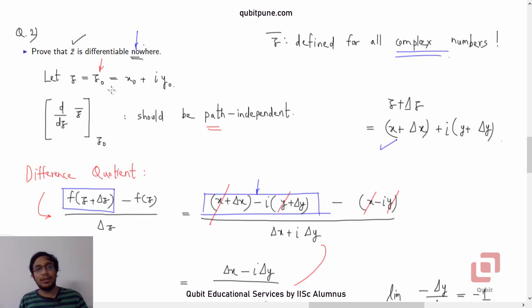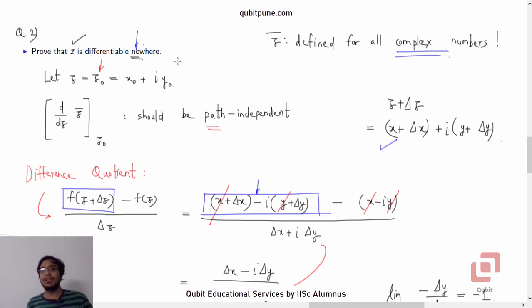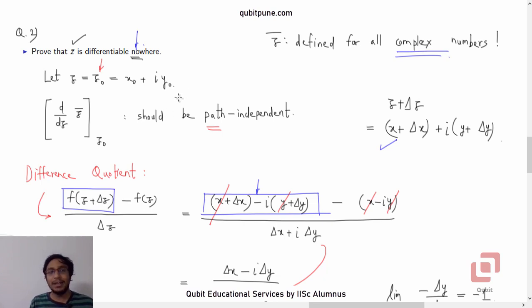As mentioned in the introduction, in the complex domain we can find many very simple-looking functions which are not differentiable at a single point, and one of them is the complex conjugate function.